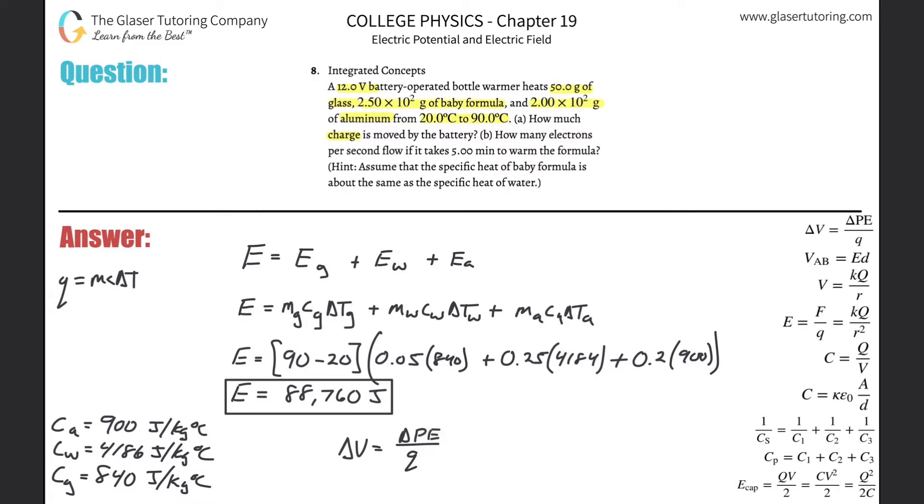Here what we're going to do is I'm going to solve for Q, they're asking for charge. So using that formula, delta V is going to equal delta PE over Q. So that means Q will equal delta PE over delta V. And the potential energy is the same as the energy. Remember, conservation of energy. We've been doing this now for a few problems here in the chapter where you notice we just substitute that energy in. And the V is 12.